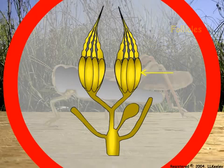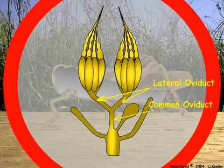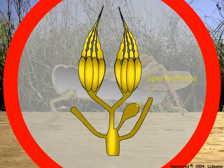Mature oocytes are present in the basal follicle. They are then coronated in the follicle, passed into the lateral oviducts and to the common oviduct. Sperm are released from the spermatheca to fertilize the egg as it passes through the common oviduct for oviposition.